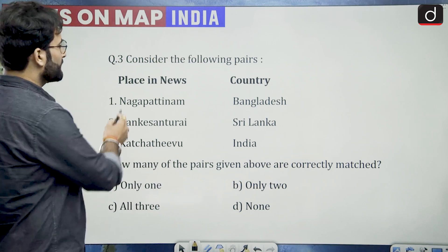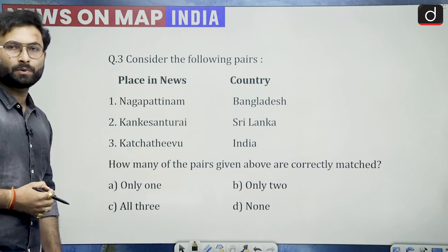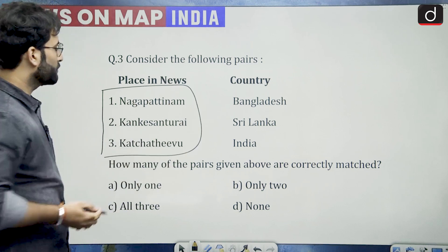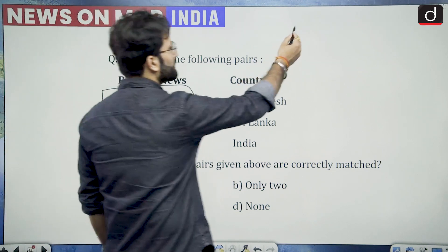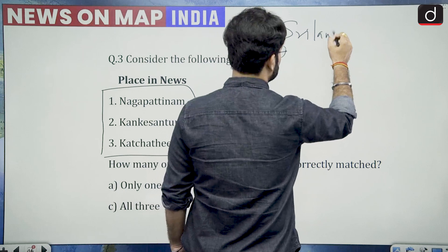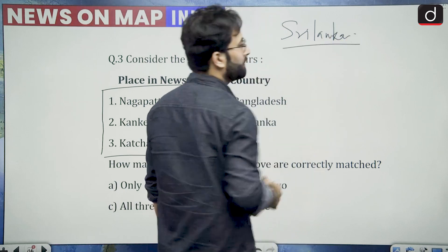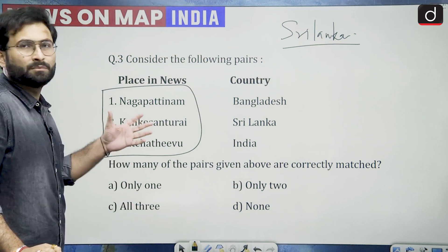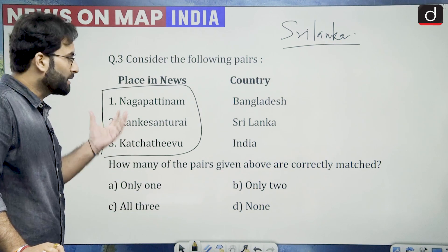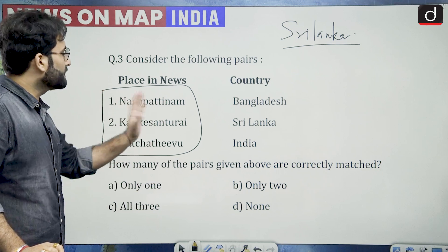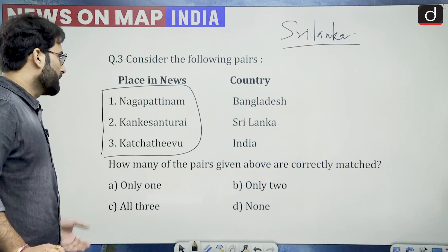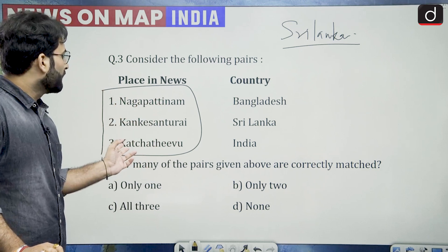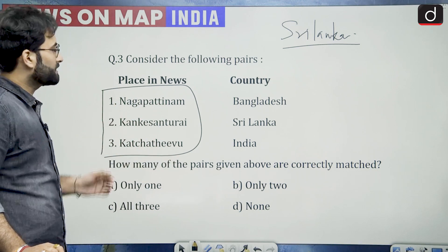Consider the following pairs of places in the news and their corresponding countries. These three particular places were in news because recently Sri Lankan President Mr. Vikramasing visited India, and there were some facts and debates going on. In that regard, these particular places are in news: Nagapattinam, Kankesanturai, and Katchatheevu. We have to see which are correctly matched.